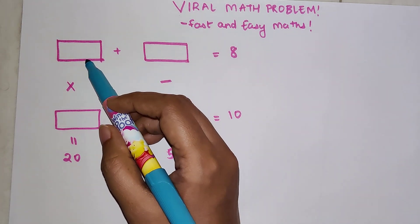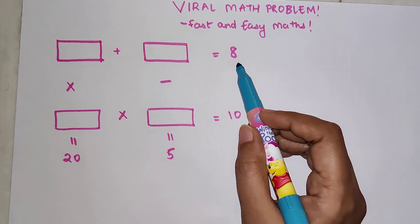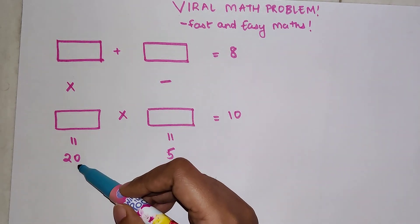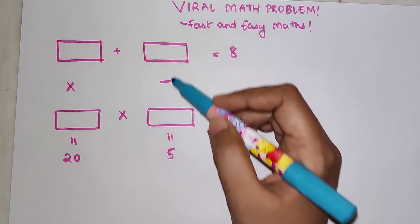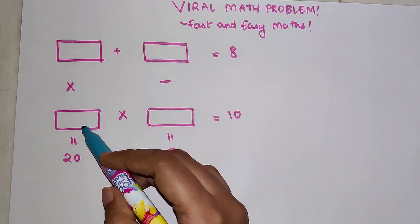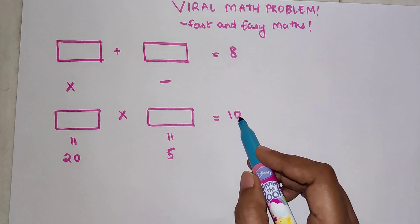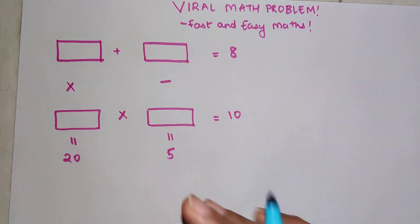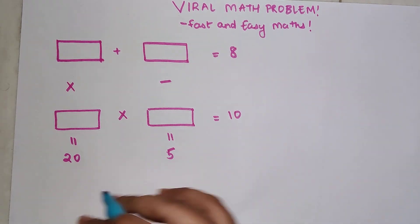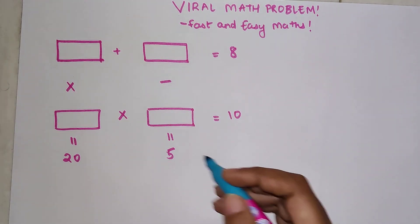The question is: if this box plus this box gives you the value of 8, and this box times this box gives you the value of 20, and this box minus this box gives you the value of 5, and at the same time this box multiplied by this box gives the value of 10, then your question is to find these values in such a way that this entire equation holds true.